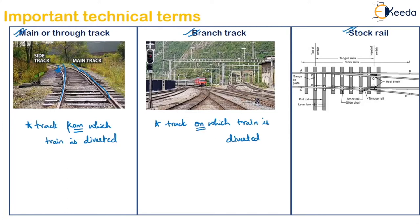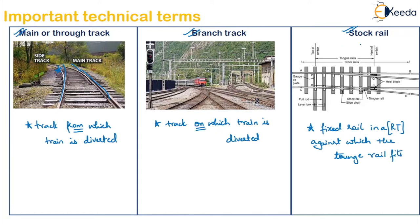The next one is the stock rail. Stock rail is your fixed rail in a railway track against which the tongue rail fits. If you observe in this figure, from A to B — this is your stock rail. So a fixed rail in a railway track against which the tongue rail is fixed is called the stock rail.